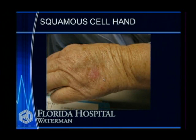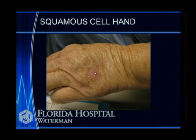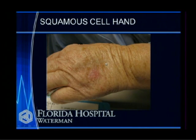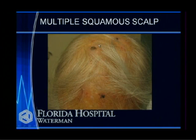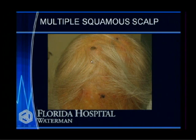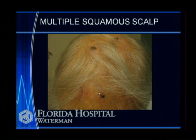Skin cancer on the hand is a very common place to find it — sun-exposed areas. It can start as a raised, roughened, erythematous pinkish lesion that won't heal despite conservative care. This one was biopsied and turned out to be squamous cell carcinoma. There are also multiple squamous cell carcinomas in the scalp. If you don't wear a hat, your scalp is exposed to a lot of sunlight, so your whole scalp is at risk.